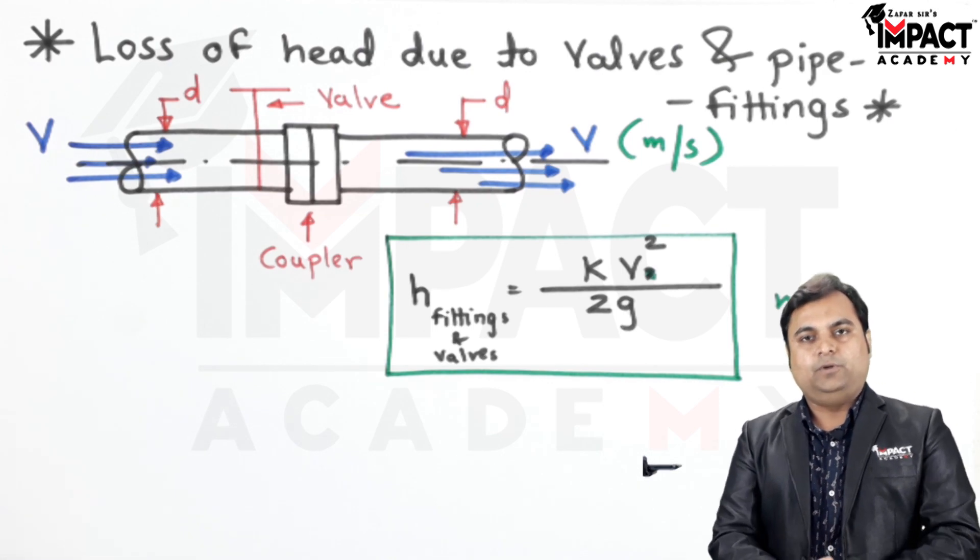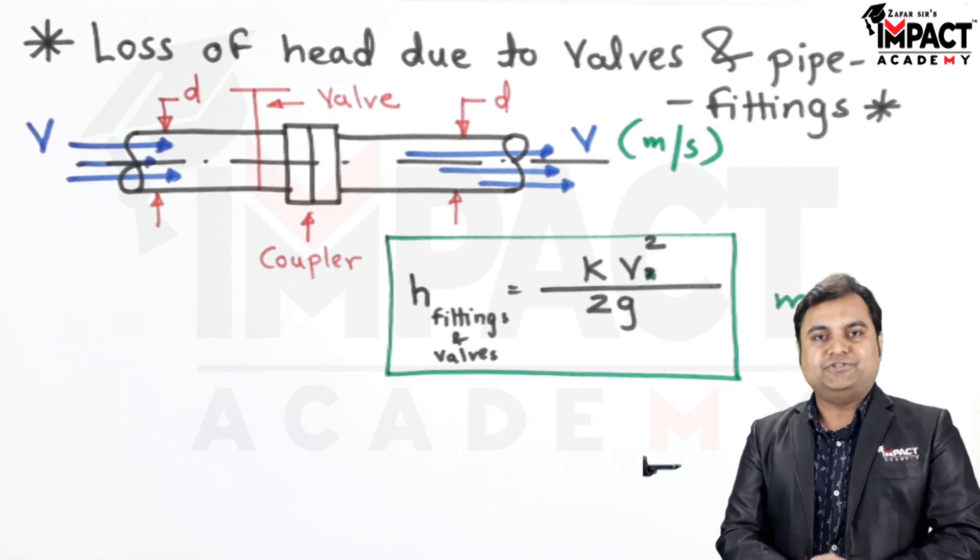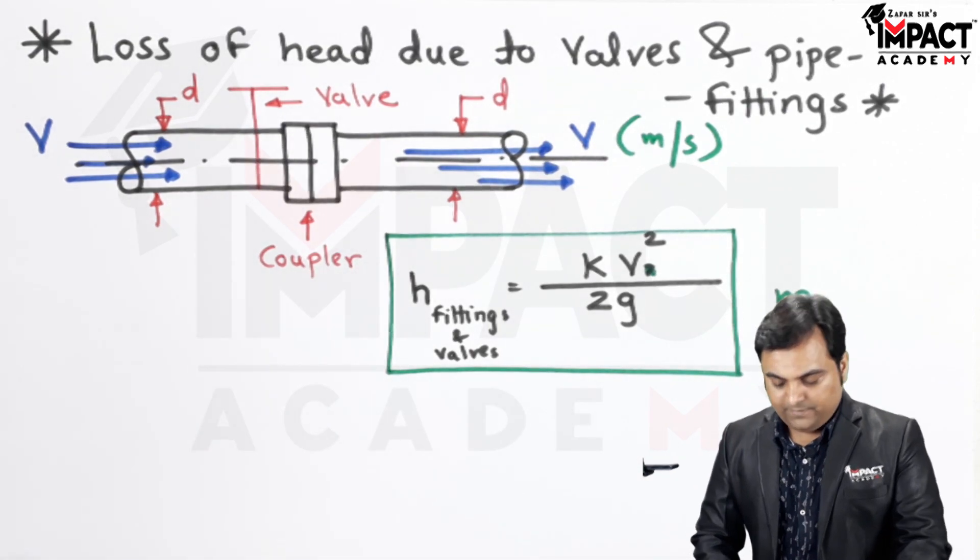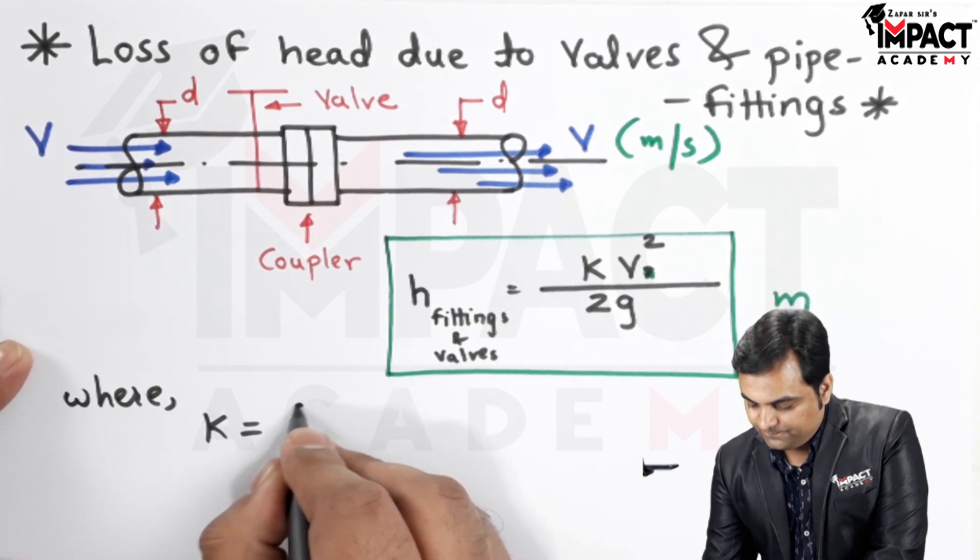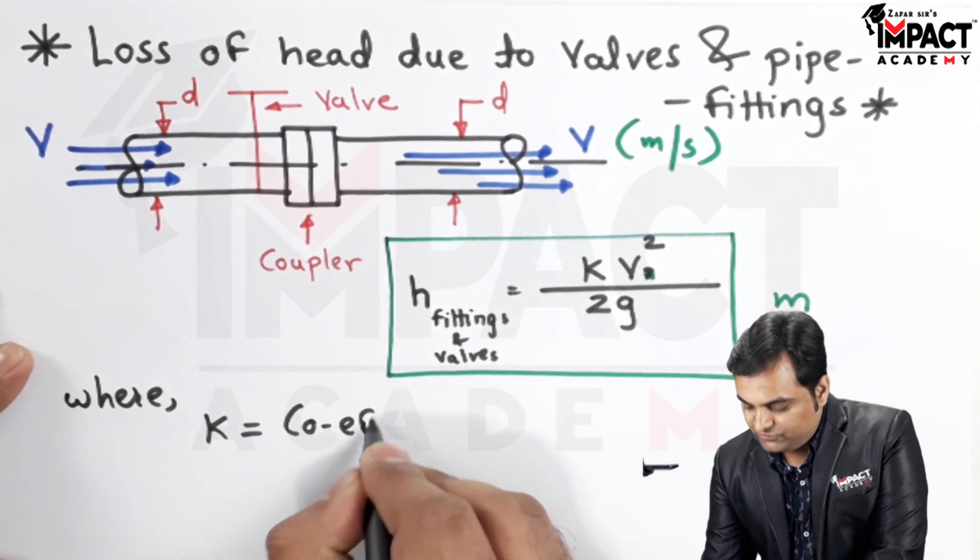Whenever we are solving problems related to minor losses, also here we have k. Now this k is called as the coefficient...